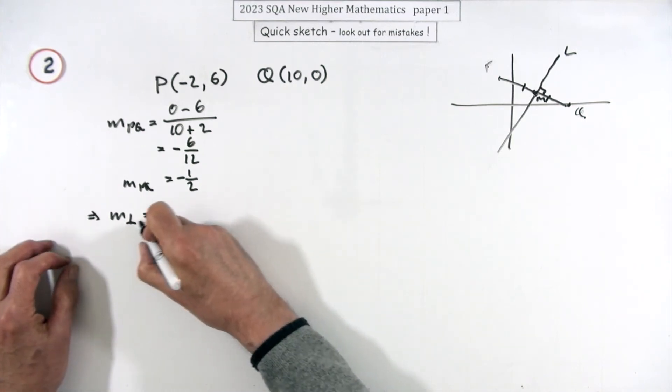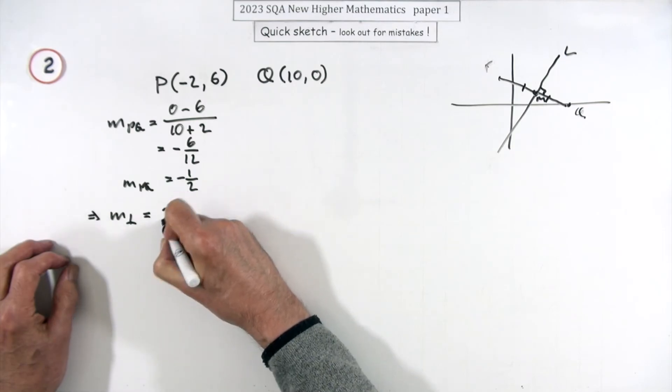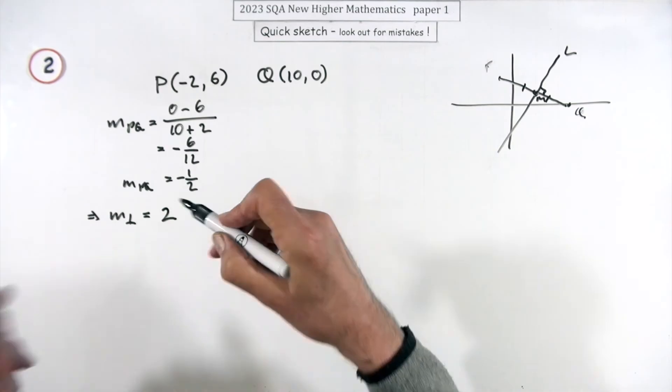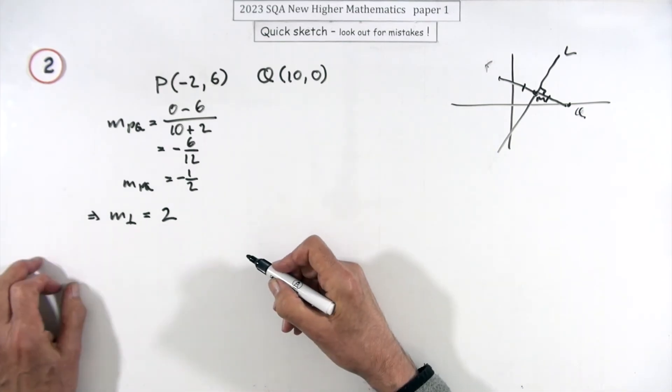From that you can extract the perpendicular one. You might need a statement that the product should come to negative 1, I'm just going to go straight in with it. So the perpendicular gradient will be the negative of the reciprocal, whatever it takes for the two of them to multiply to give negative 1.